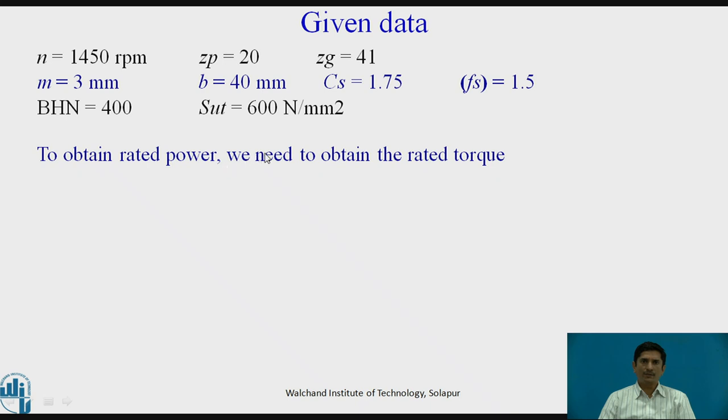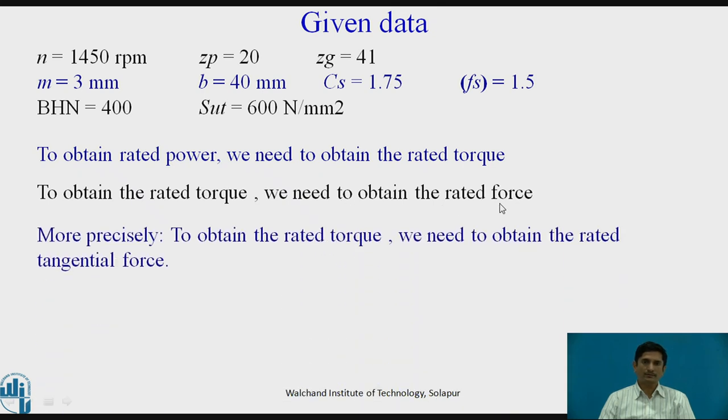Now, to obtain the rated power, we need to obtain the rated torque. To obtain the rated torque, we need to obtain the rated force. If I talk more precisely, to obtain the rated torque, we need to obtain the rated tangential force. That means our job is to find out Pt somehow. Tangential force is given by beam strength or wear strength. Because we know that Sb equals Mσby, but Sb is nothing but maximum value of Pt. Or Sb equals Bq dp' k, but there also we know that Sb equals Pt max.